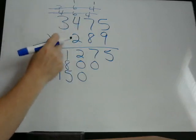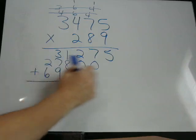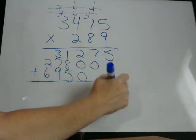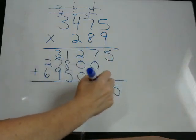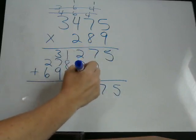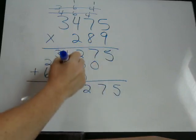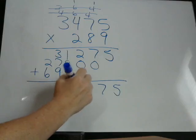Now we're done with all the numbers, so we add these up. 5 plus nothing is 5. 7 plus 0, plus nothing is 7. 2 plus 0, plus 0, is 2. 1 plus 9, plus 5, is 14.